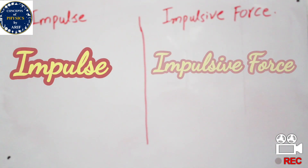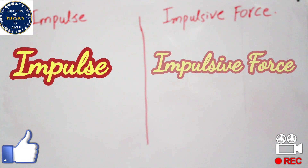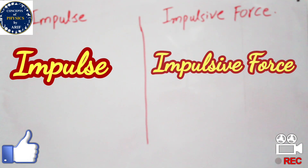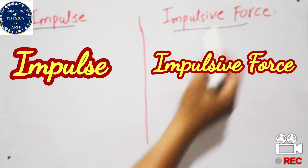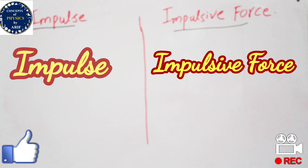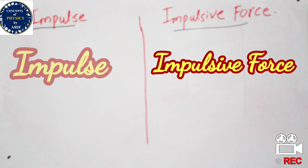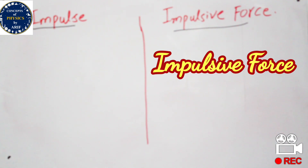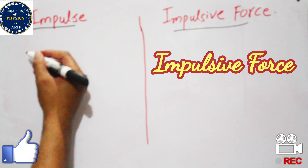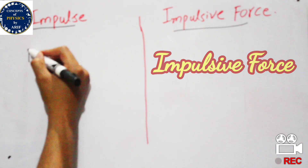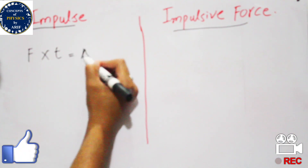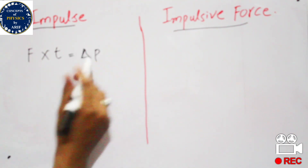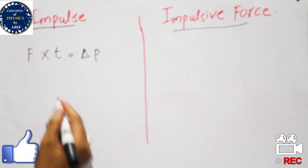Hi guys, welcome to my YouTube channel. In this video we will discuss the difference between impulse and impulsive force. First of all, we will start by using the formula of impulse. The formula of impulse is F cross T, which is equal to delta P, or change in momentum.